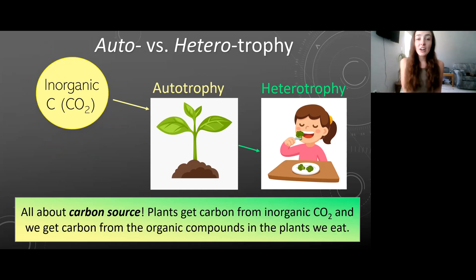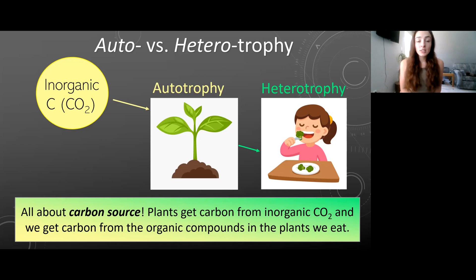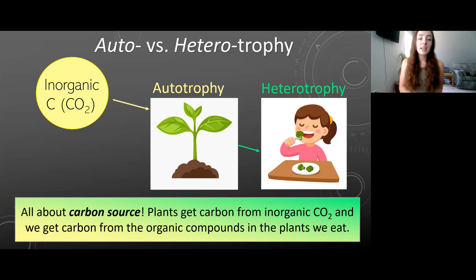Now let's move on to auto versus heterotrophy. Autotrophy and heterotrophy just have to do with the carbon source. We're all made of carbon — plants, pretty much all living things are built from carbon. Wherever we get our carbon source can be either an inorganic source or an organic source. Inorganic sources of carbon would be like CO2. Plants are examples of autotrophs — they get their carbon from inorganic CO2. And we are examples of heterotrophs — we get our carbon from organic compounds, like the things we eat. So an organic carbon source is heterotrophy, and an inorganic one is autotrophy.